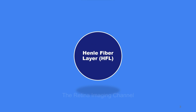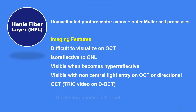Talking about the Henle fiber layer first. The Henle fiber layer is made of photoreceptor axons which are unmyelinated. Along with that, it also has Müller cell processes which traverse the retinal layers. The Henle fiber layer is not easily visualized on routine OCT.